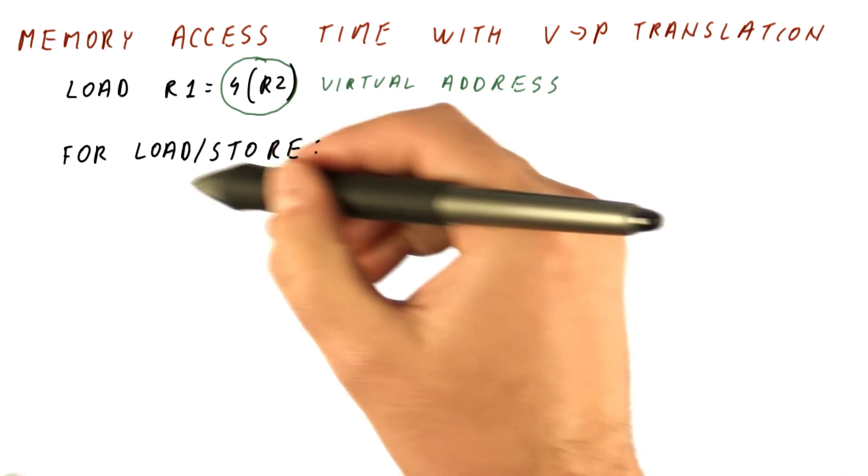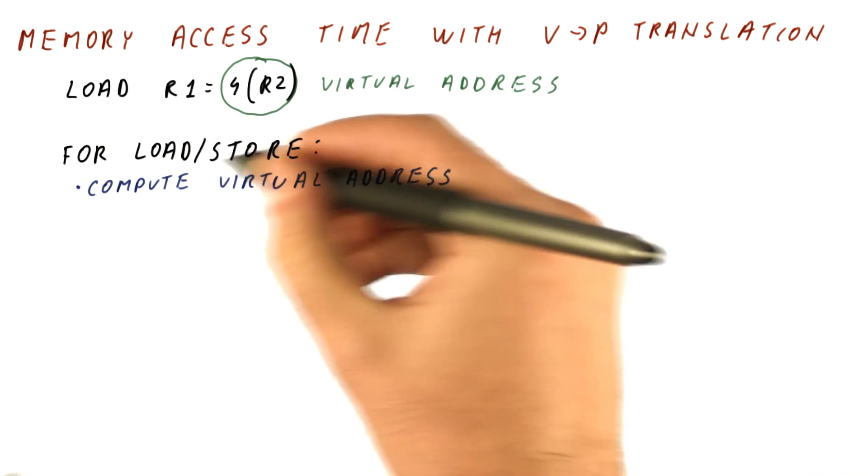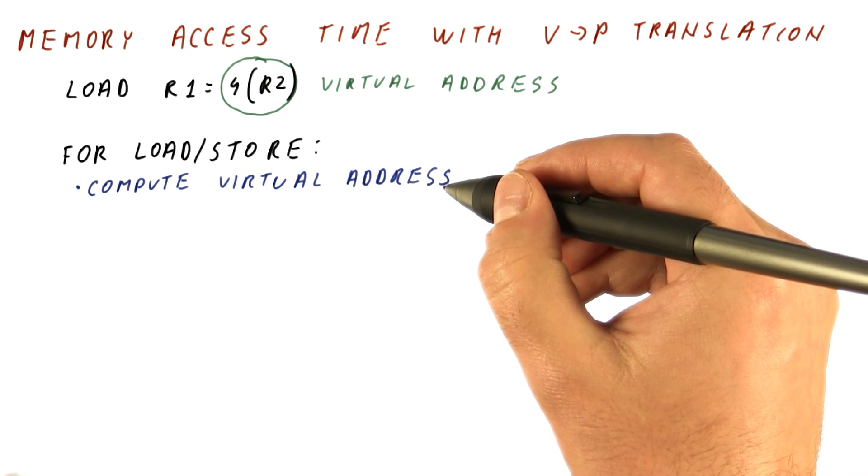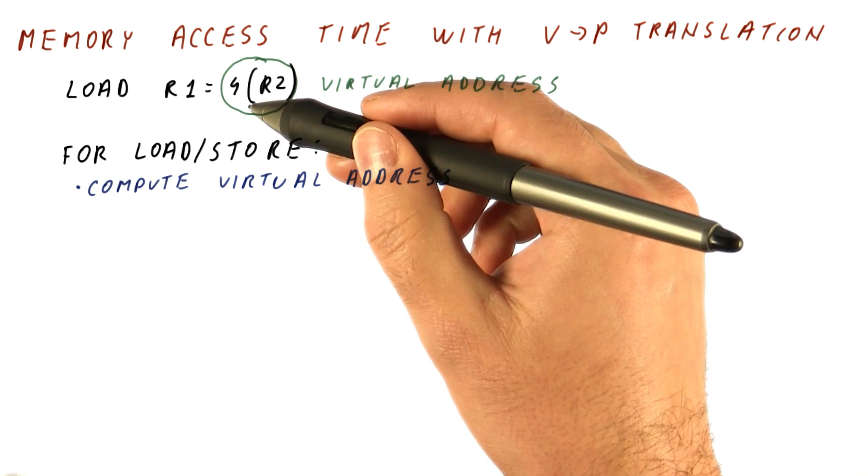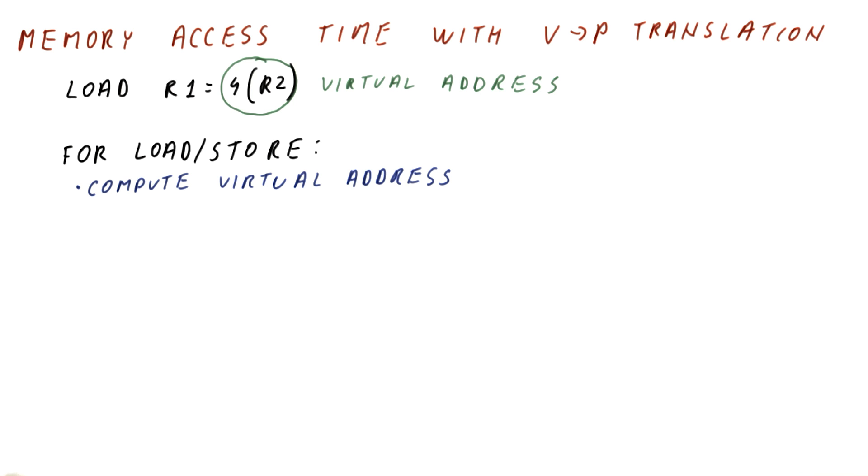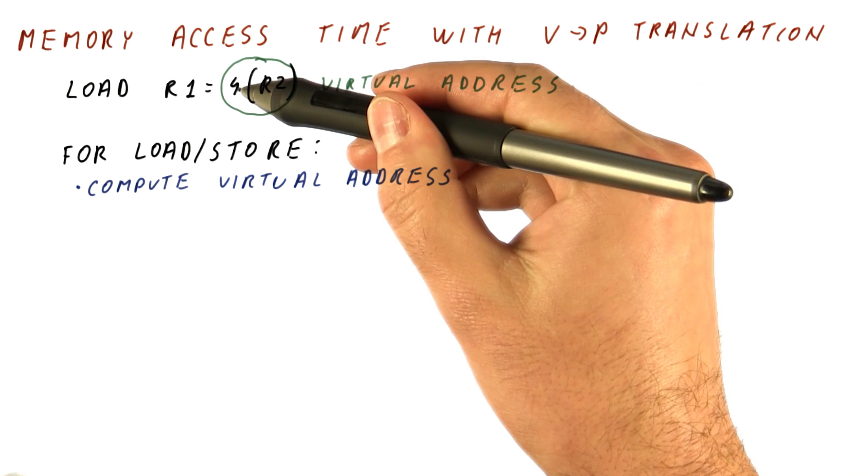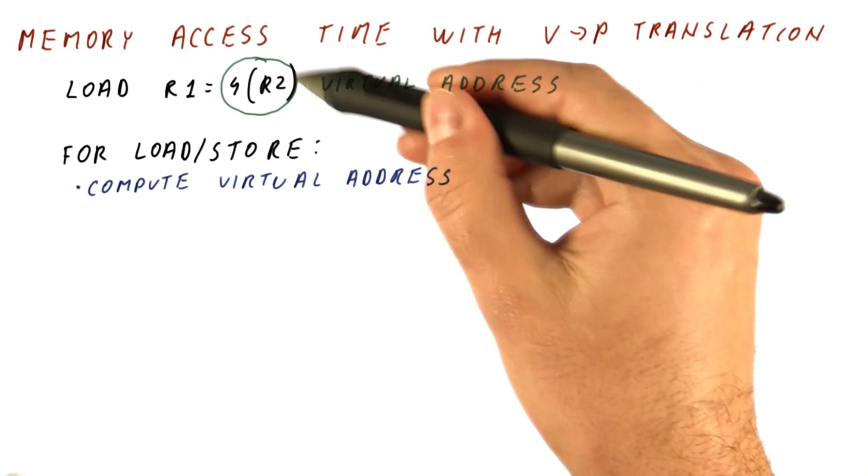So to do a load or a store, the processor has to compute the virtual address. This is quick. Usually it's just addition of two numbers that are already in the processor. One is a constant fetched with the instruction. The other one is the register that is inside the processor.